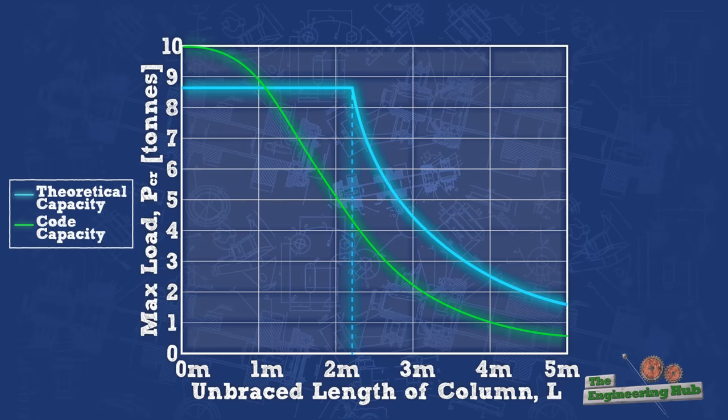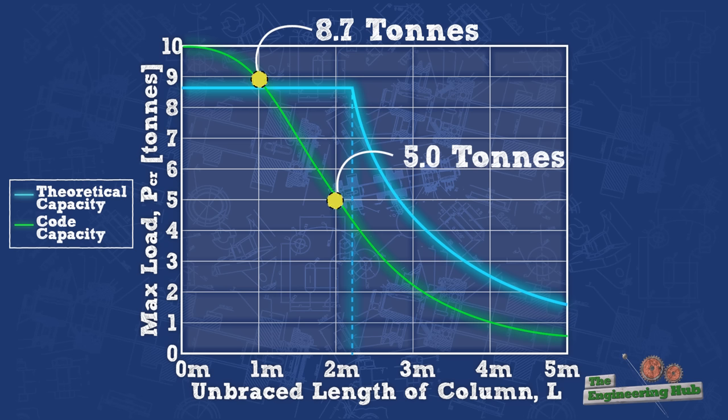As a result, the maximum compressive load for a timber post of a length of 1 m is around 8.7 tons, around 5 tons for a 2 m long post, and only 2.25 tons for a 3 m long column. These numbers clearly illustrate the effects of buckling for longer members subjected to compressive loads.